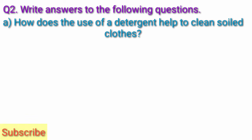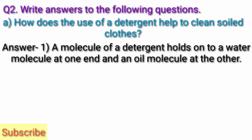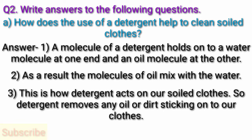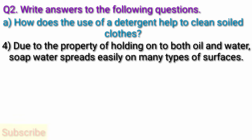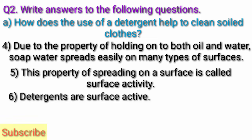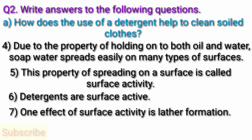Question A: How does the use of a detergent help to clean soiled clothes? Answer: A molecule of detergent holds onto a water molecule at one end and an oil molecule at the other. As a result, the molecules of oil mix with the water. This is how detergent acts on our soiled clothes, removing any oil or dirt sticking onto our clothes. Due to the property of holding onto both oil and water, soap water spreads easily on many types of surfaces. This property of spreading on a surface is called surface activity. Detergents are surface active, and one effect of surface activity is lather formation.